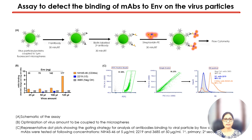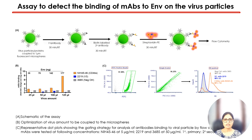We developed an assay based on coupling virus particles to fluorescent microspheres, which are then reacted with antibodies targeting different regions of the envelope. This complex is stained with anti-human IgG biotin and streptavidin PE, finally detecting the envelope-antibody interaction via flow cytometry. To optimize the assay, we quantified the envelope content of virions purified by sucrose pelleting using western blot, using different concentrations of envelope ranging from 34 to 177 nanograms. At 177 nanograms, binding of the positive control antibody NIH 4546 was significantly enhanced while the negative control antibody 3685 showed low background binding.